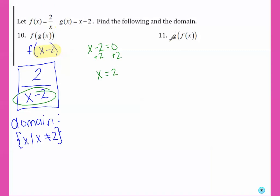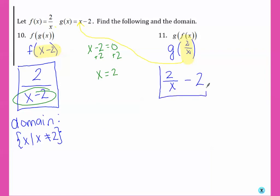For g of f of x, we're going to put f of x inside of g, so we have g of 2 over x. We take 2 over x and plug it in for the x in g, giving us 2 over x minus 2. We haven't learned how to combine a fraction and a whole number yet, so we'll leave it like that for now. For the domain restriction, the only thing in the denominator is x, and x equals 0 makes it 0, so our domain restriction is x such that x cannot equal 0.